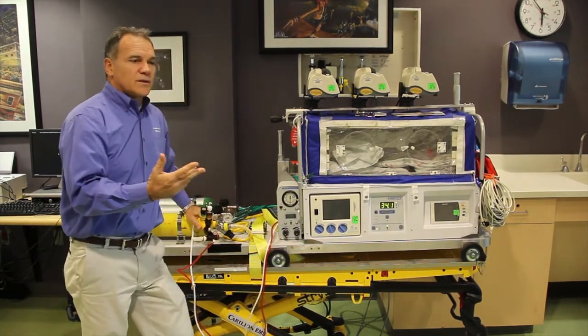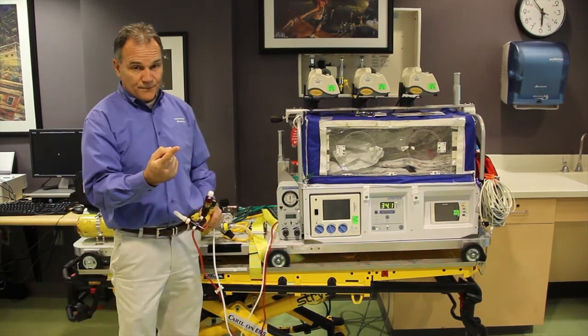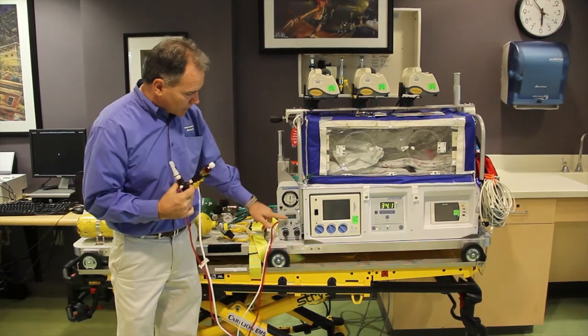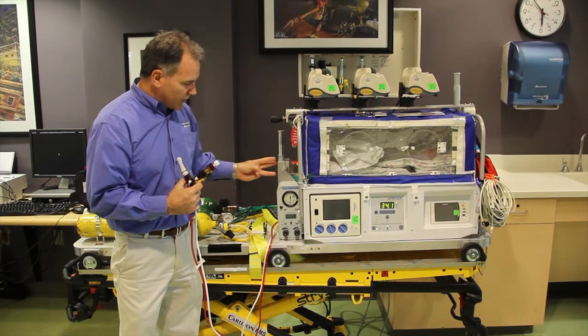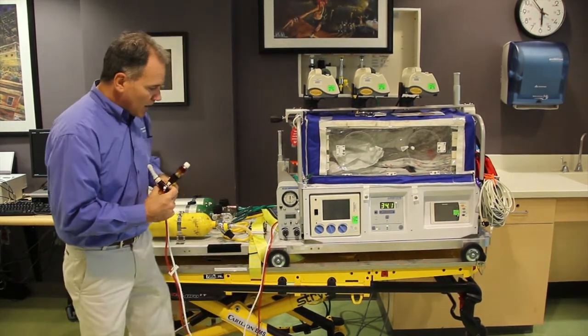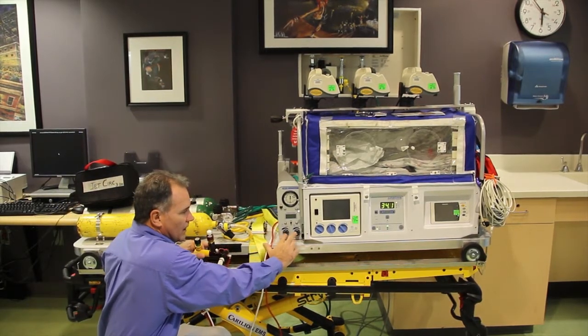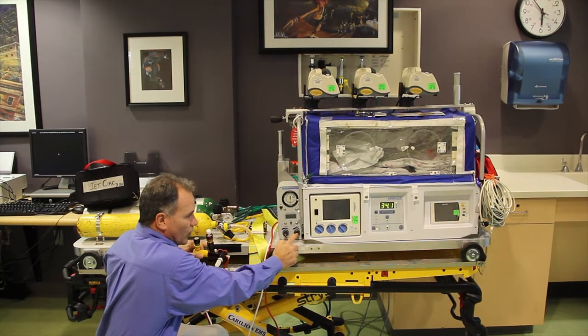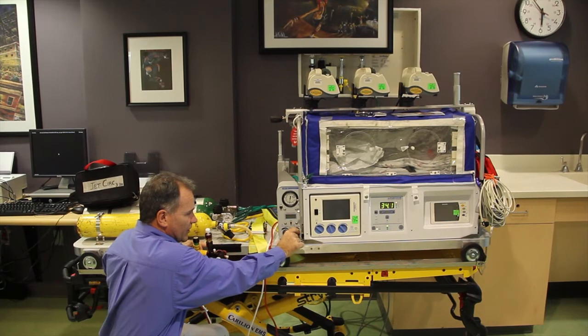The way that the TXP works is fairly simple. There are actually three things that we do when we set up a patient on high frequency: we'll set the frequency right here, then we'll set the mean airway pressure, and then the third thing we'll do is set the amplitude based on chest wiggle. The TXP has two knobs down below, and these are the only two knobs on the ventilator. One says amplitude, which is like creating tidal volume.